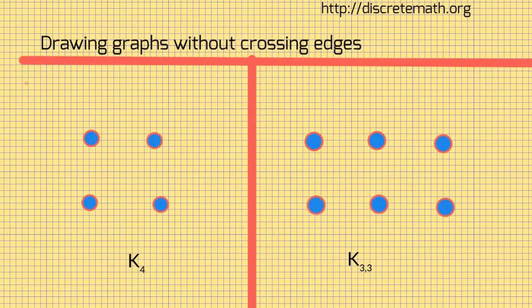We'll look at two standard examples here. First is, on the left, a K4. It's going to be a K4, which is a complete graph on four vertices, and every vertex has to be connected to every other vertex.